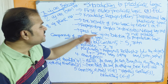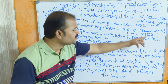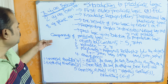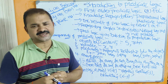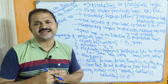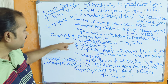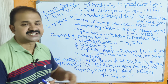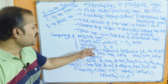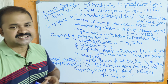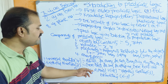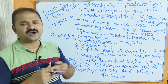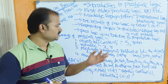Predicate logic is an extension to propositional logic. Predicate logic mainly contains five components: first, objects or constants; second, variables; third, predicates; fourth, quantifiers; and fifth, connectives.